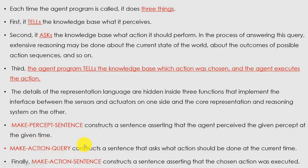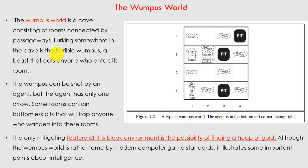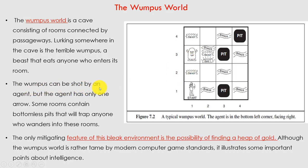Now we are going to talk about the Wumpus world, which is one kind of game. The Wumpus world is a cave consisting of rooms connected by passageways. Lurking somewhere in the cave is a terrible Wumpus — an abyss that eats anyone who enters its room. So if anyone enters the room where the Wumpus is present, it is going to eat that person or agent. The Wumpus can be shot by an agent, but the agent has only one arrow.